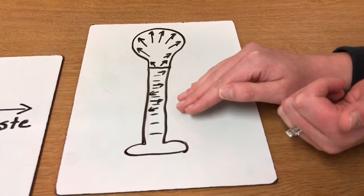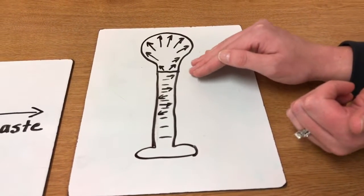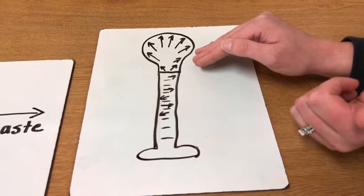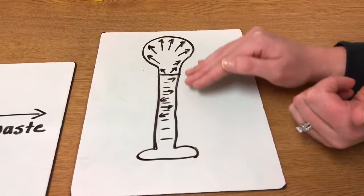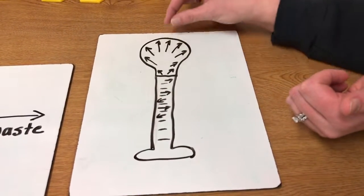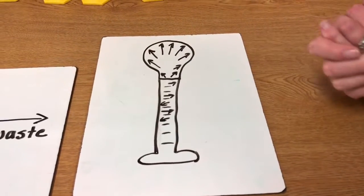and as it continues to be produced, those molecules begin bouncing around because of this change of matter state, and then they begin pushing that balloon open as the gas begins to produce.